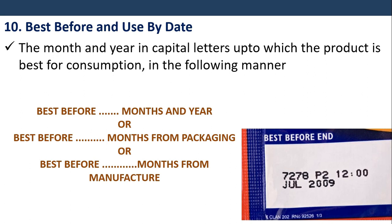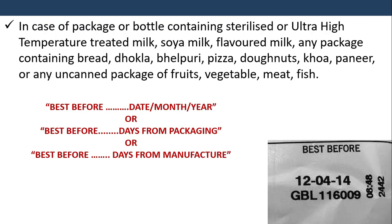Best before and used by date: The month and year in capital letters up to which the product is best for consumption shall be given in the following format: 'Best before [month and year],' or 'Best before __ months from packaging,' or 'Best before __ months from manufacture.' For packages containing sterilized or ultra-high temperature treated milk, soya milk, flavored milk, bread, or meat and fish products, the format is: 'Best before [date/month/year],' or 'Best before __ days from packaging,' or 'Best before __ days from manufacture.'